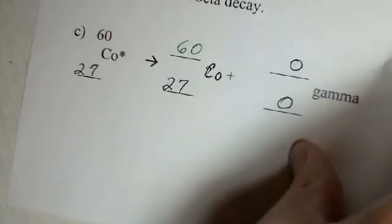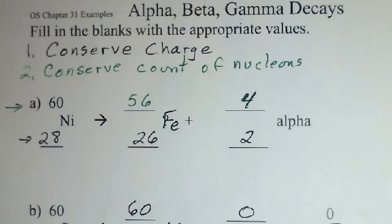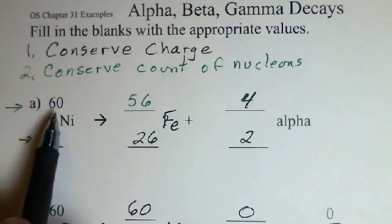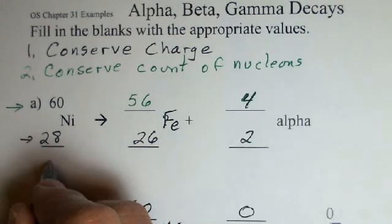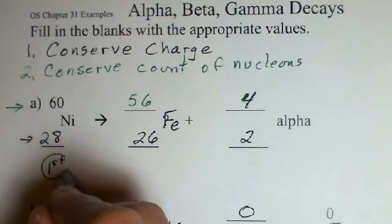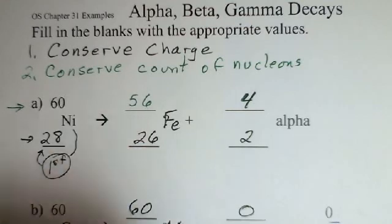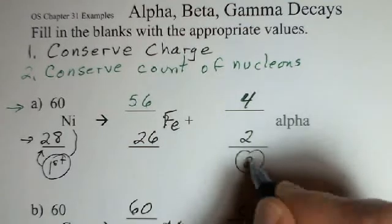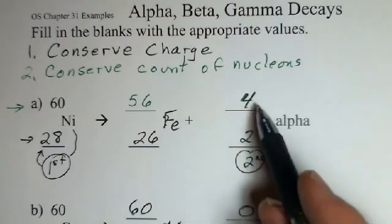We conserve charge, we conserve the count of protons and neutrons. I first go to some table, look up the chemical symbol, and find out what the number of protons is. Secondly, I remember what the count of protons and neutrons and what the charge number is for the radioactive decay.